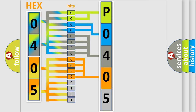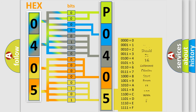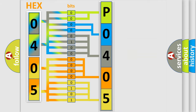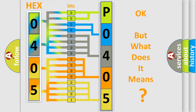A single byte conceals 256 possible combinations. We now know in what way the diagnostic tool translates the received information into a more comprehensible format. The number itself does not make sense to us if we cannot assign information about what it actually expresses.